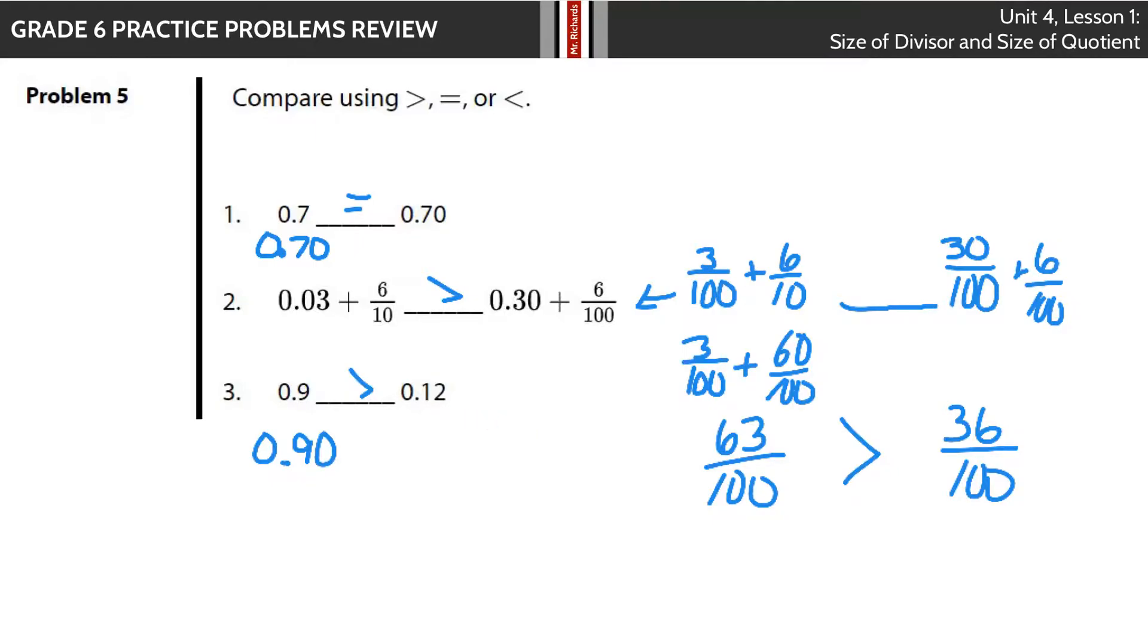I do like to compare when they're lined up in the hundredth spot. It makes it easier to say, okay, 90 is bigger than 12. Don't just look at this and go 9 is smaller than 12, so no, no. You've got to either line them up and understand what's going on with the place value here.